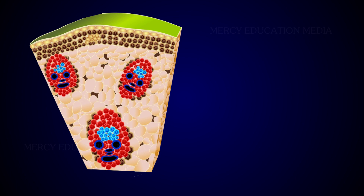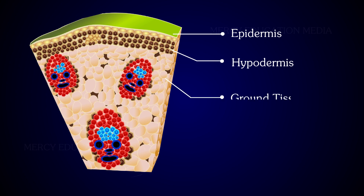Internal structure of the monocotyledonous stem reveals the epidermis, hypodermis, ground tissue, and vascular bundles.